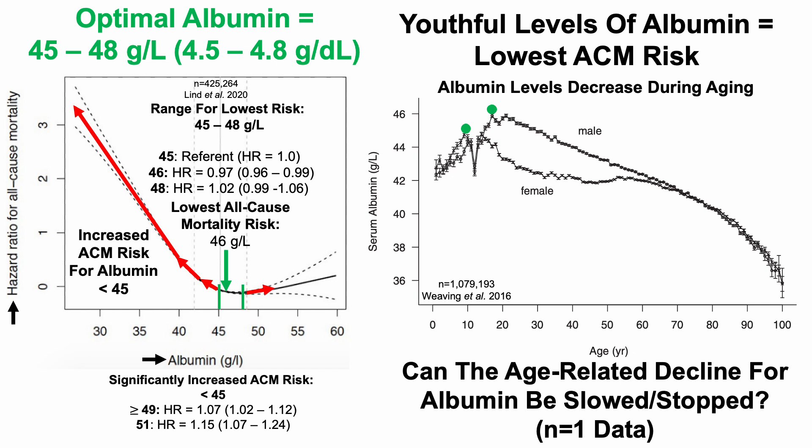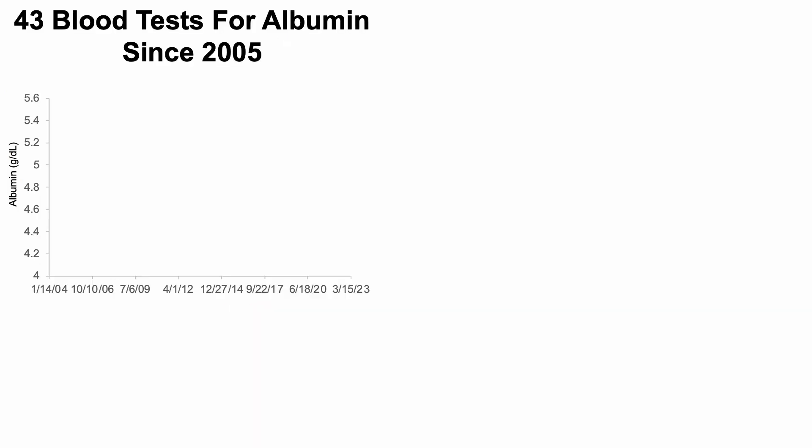Can the age-related decline for albumin be slowed or stopped? Let's look at my own N of 1 data. I have 43 blood tests for albumin since 2005. When I first started tracking blood biomarkers, I wasn't tracking diet. From 2005 to 2013, I was going to the doctor about once a year and recording that data in an Excel spreadsheet. My average albumin over those seven blood tests over that nine-year period was 4.74 grams per deciliter.